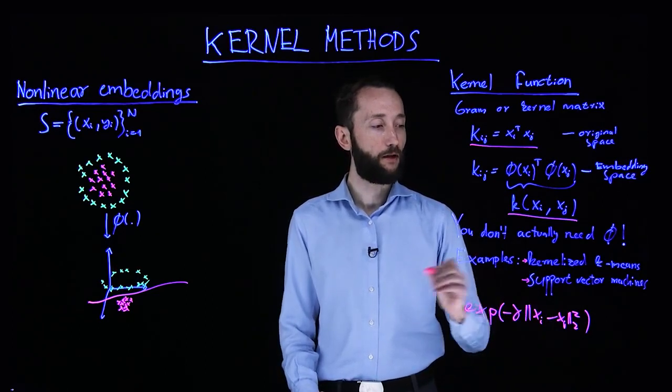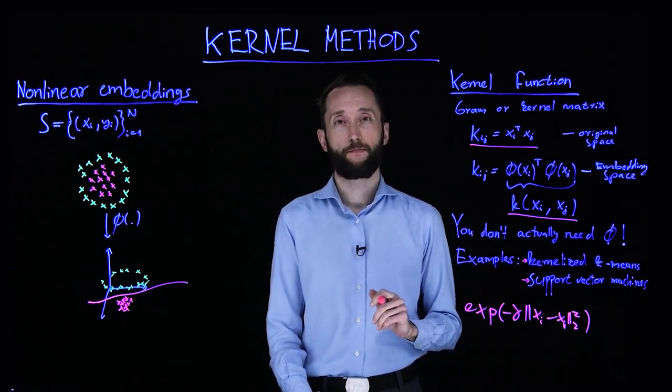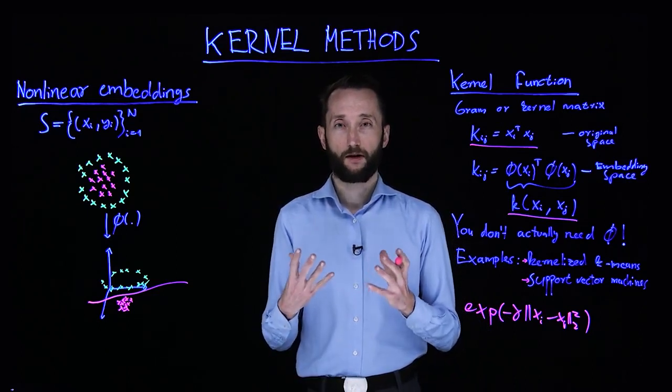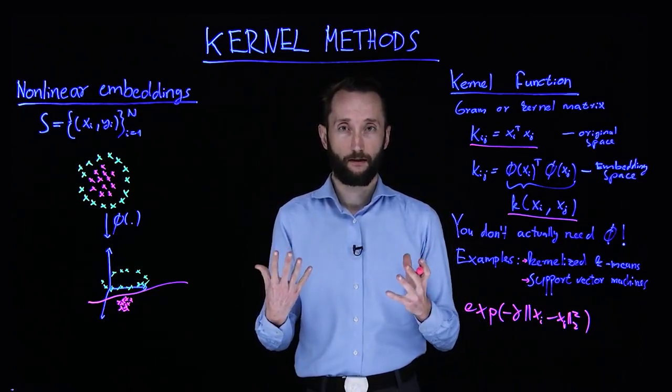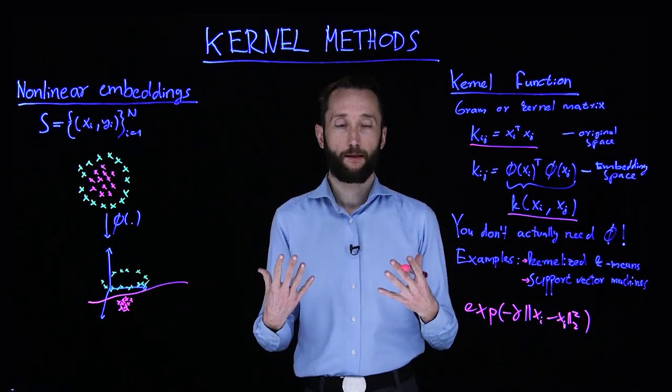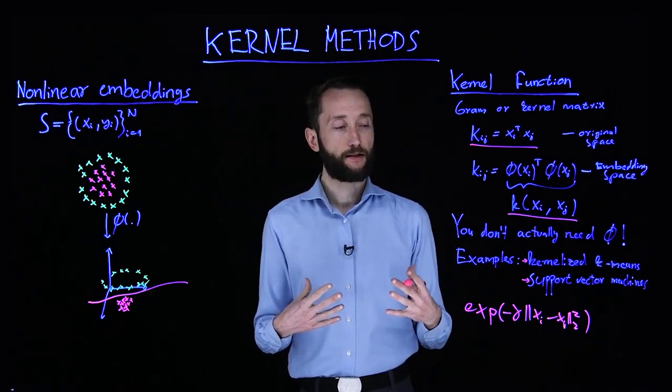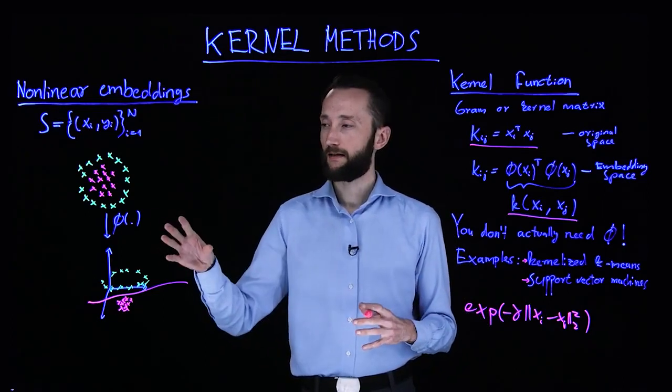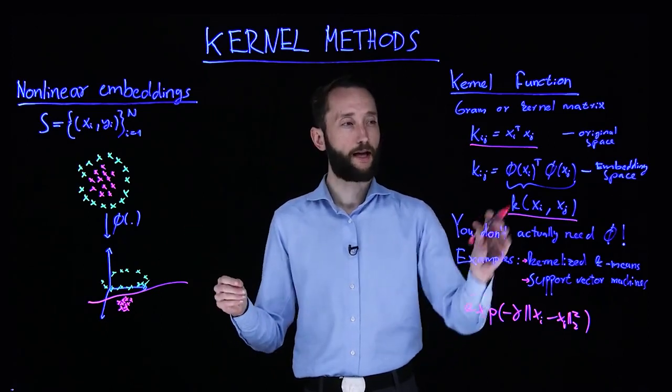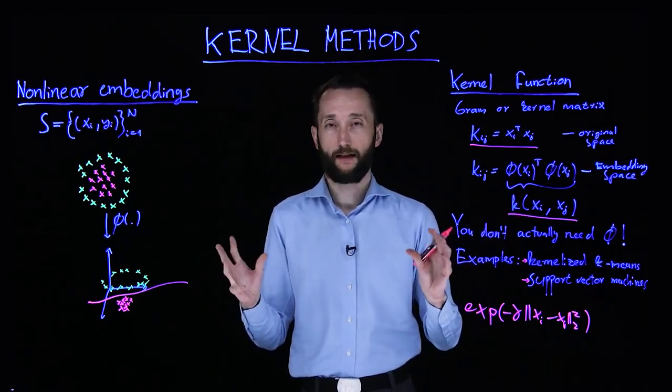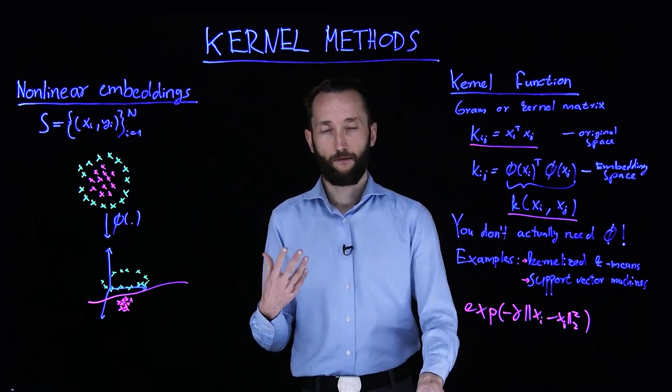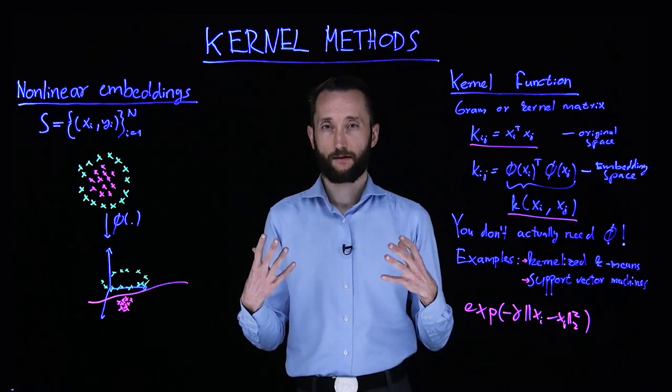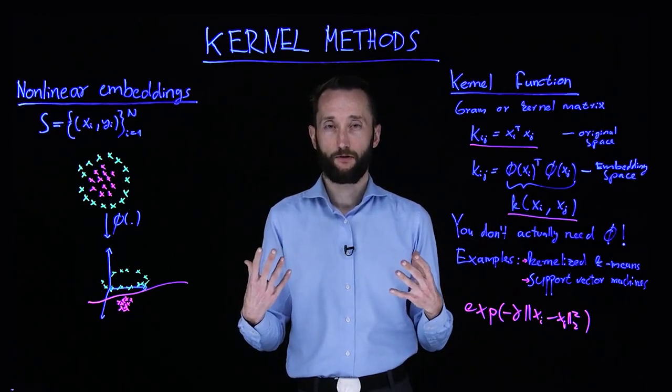And another great example is support vector machines, which ensure certain sparsity structure in the model, and they generalize well. So these models went out of fashion because, in essence, they are shallow. So you only calculate this nonlinear embedding, and that's it. So they are not very good in this automatic feature extraction that deep learning enables you to do.